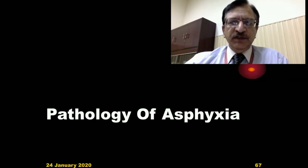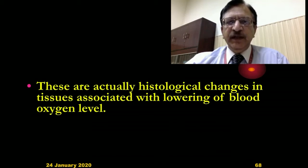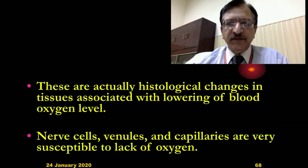Now the pathology of asphyxia. Pathology means what altered histology appears as a result of asphyxia. These are the histological changes in the tissues associated with lowering oxygen concentration. The nerve cells and venule capillaries are very susceptible to anoxia or lack of oxygen, so they are first going to experience that insult.